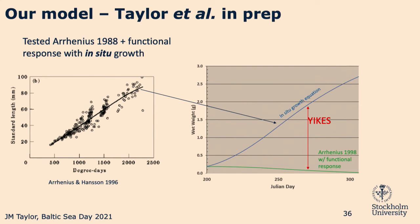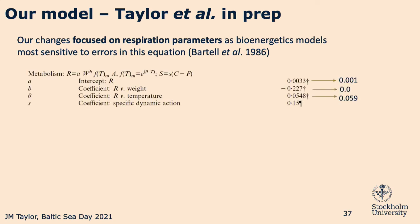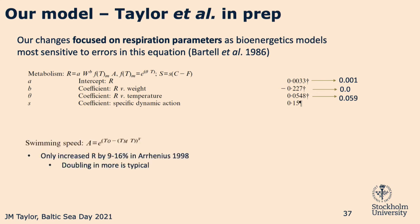We decided to make some changes, focusing on the respiration parameters, as these drive the model and it is most sensitive to them. We changed a few metabolism parameters based on literature data for herring. One of the bigger changes was with swimming speed — in the Arrhenius model, the activity multiplier only increased basal respiration by 9 to 16%, whereas in other fish models this activity multiplier usually doubles respiration or more.